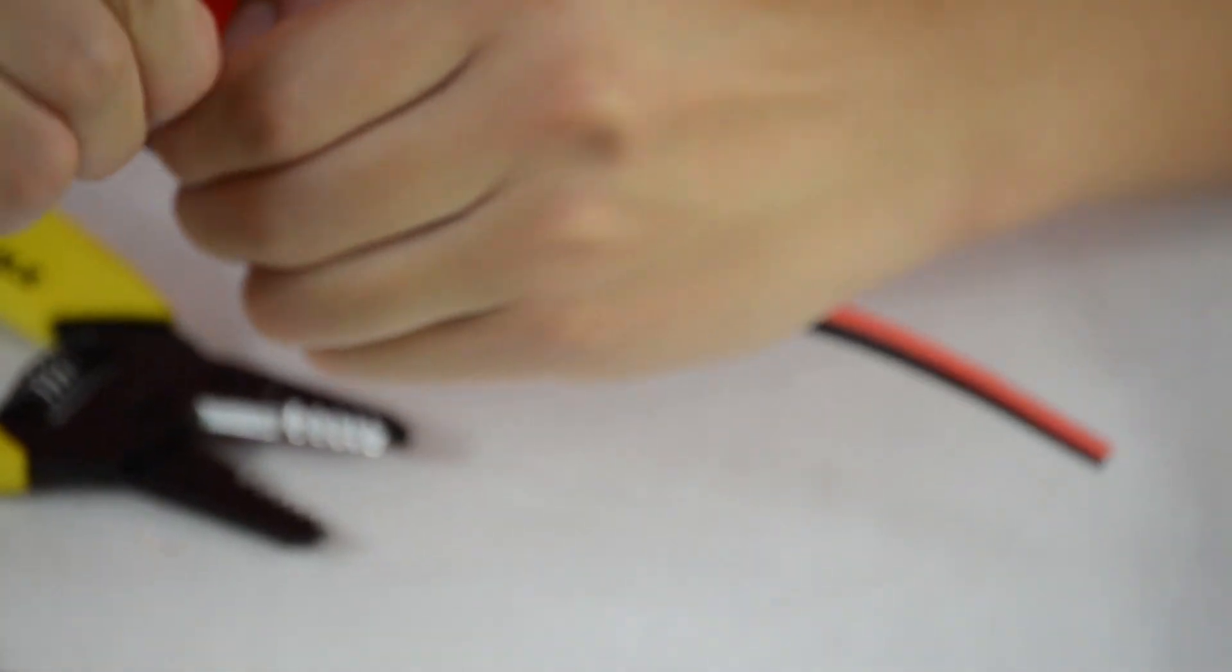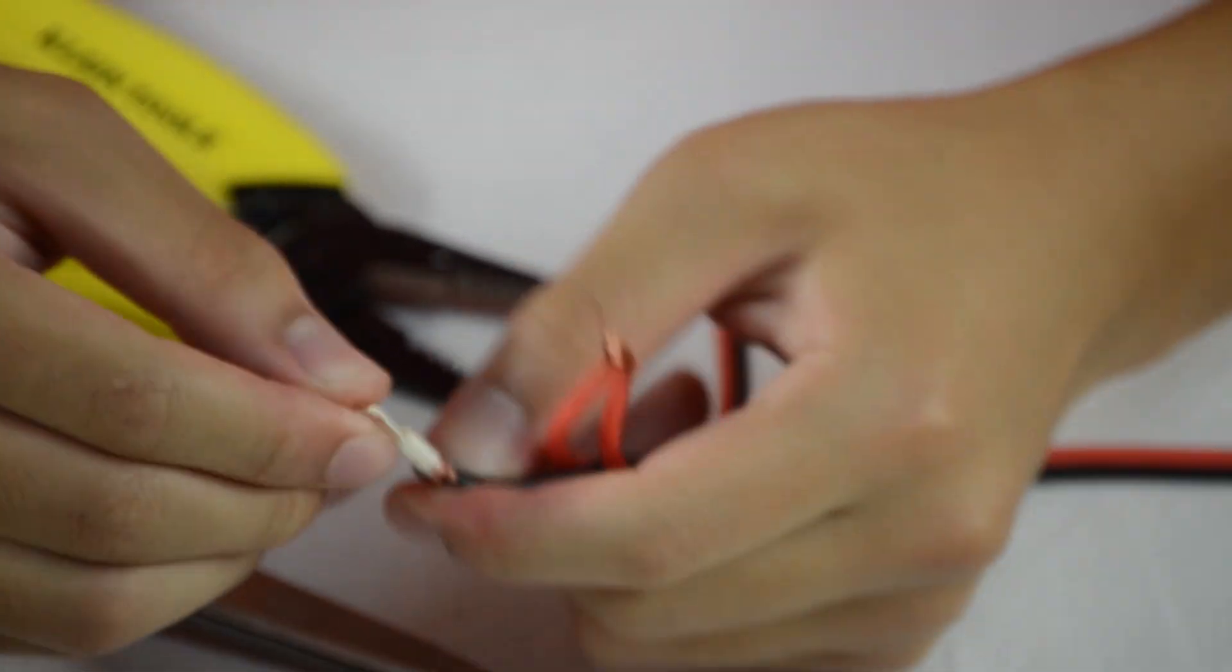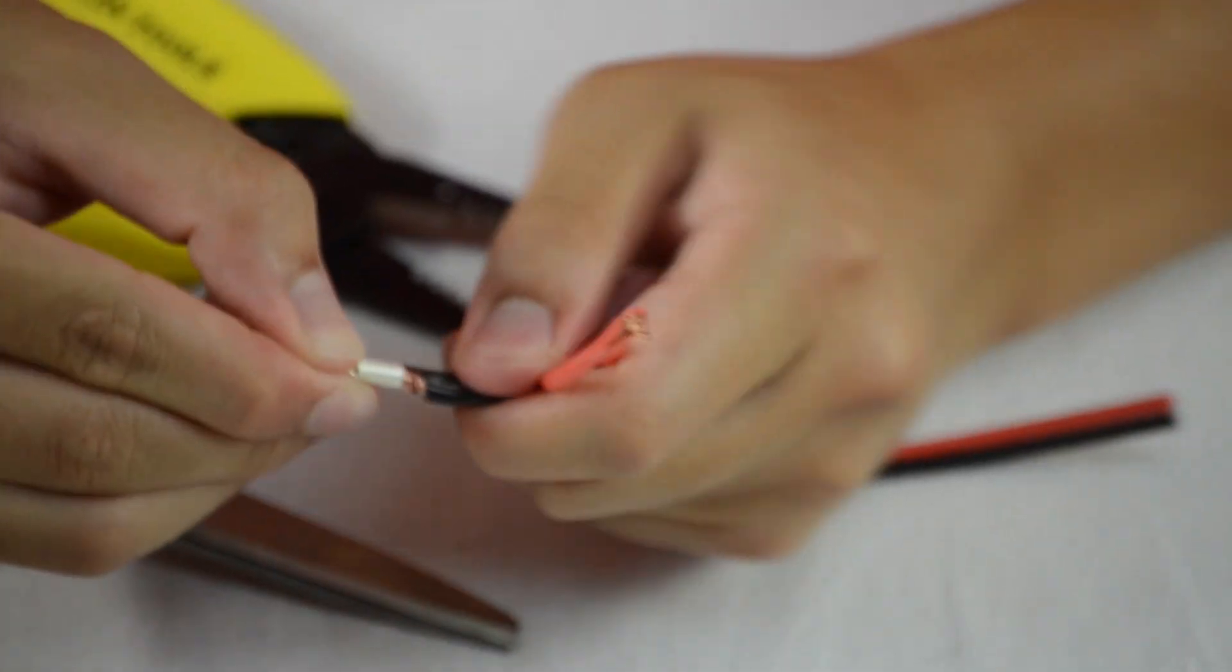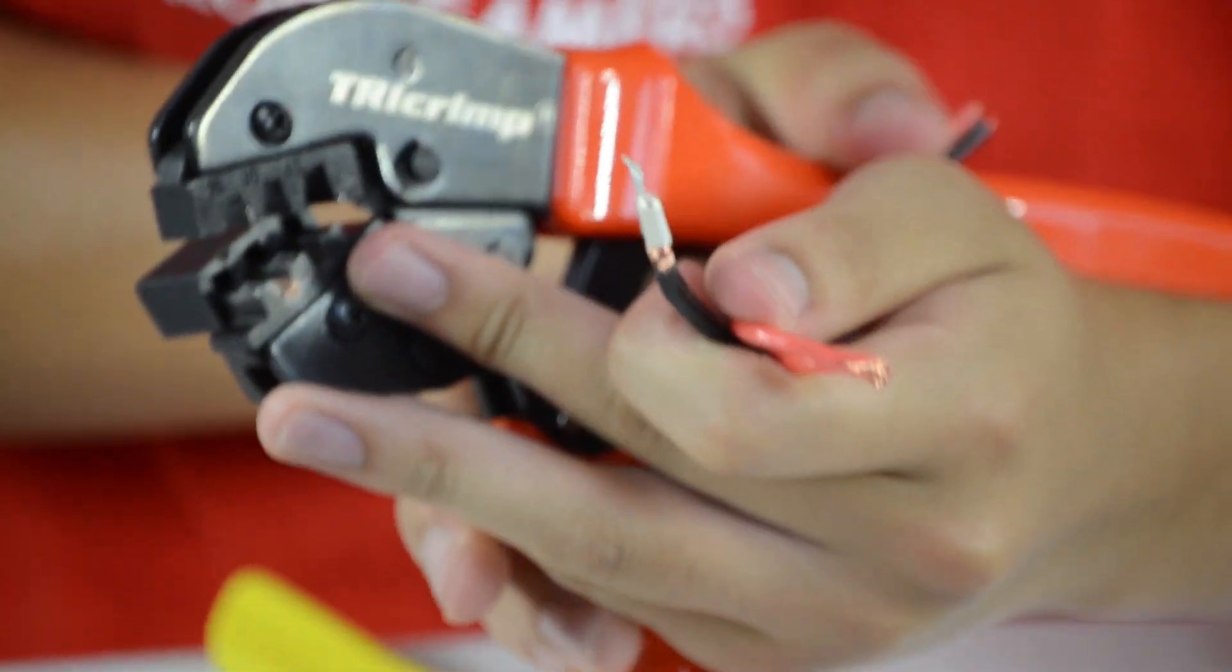Okay, now when you have these two copper tips exposed, you want to twist them both to each other and then take your 30 gauge metal tip and then just simply slide it over. Now, once you've done that, you just want to slide it into the 30 amp hole that you see on your crimper.